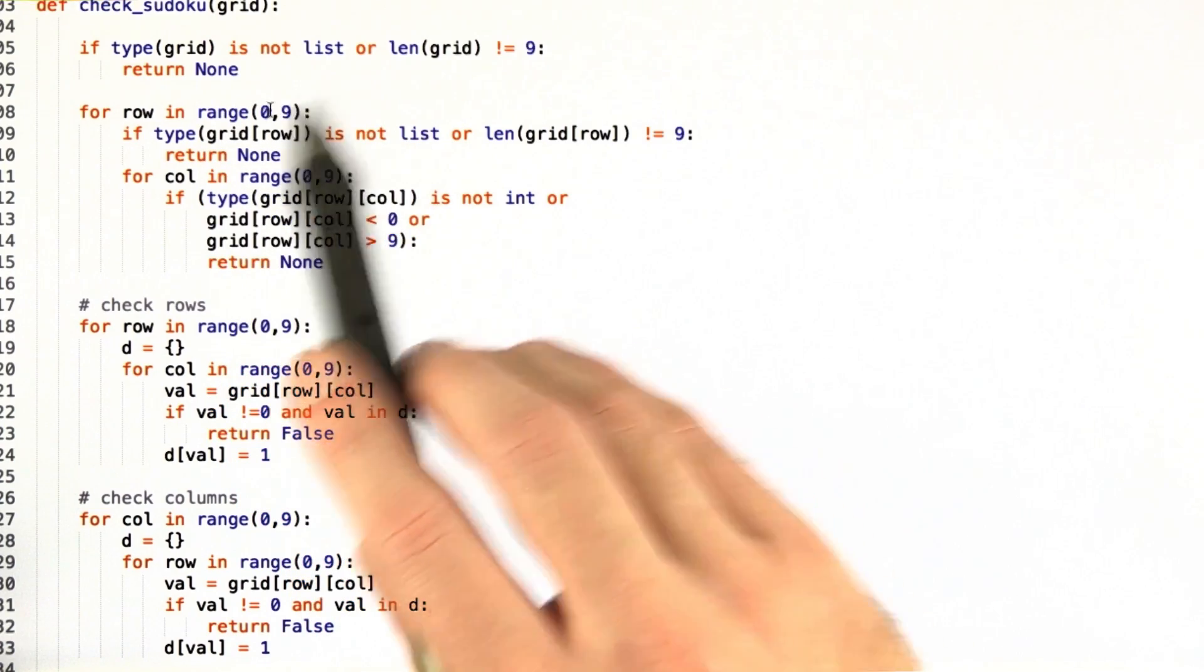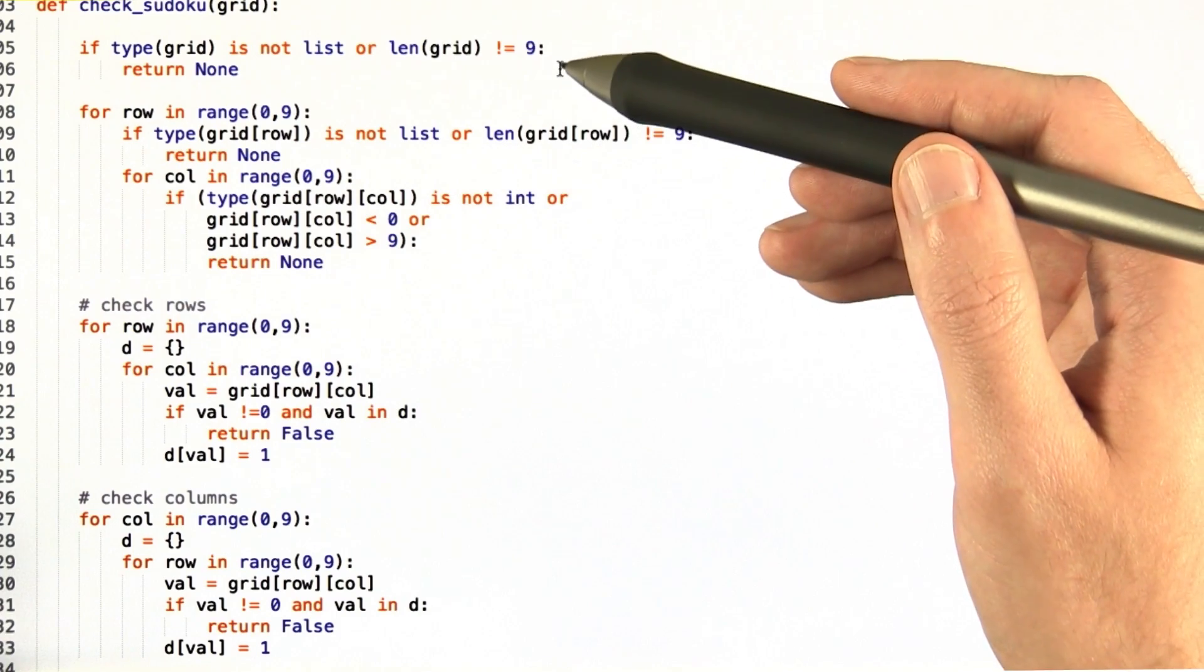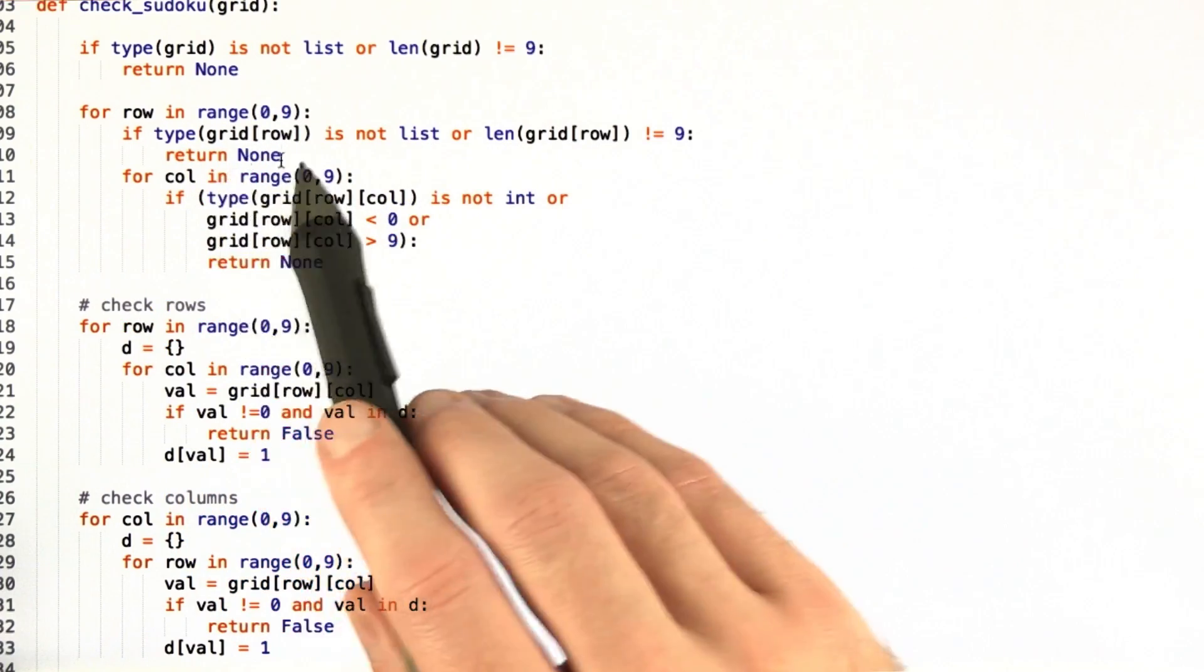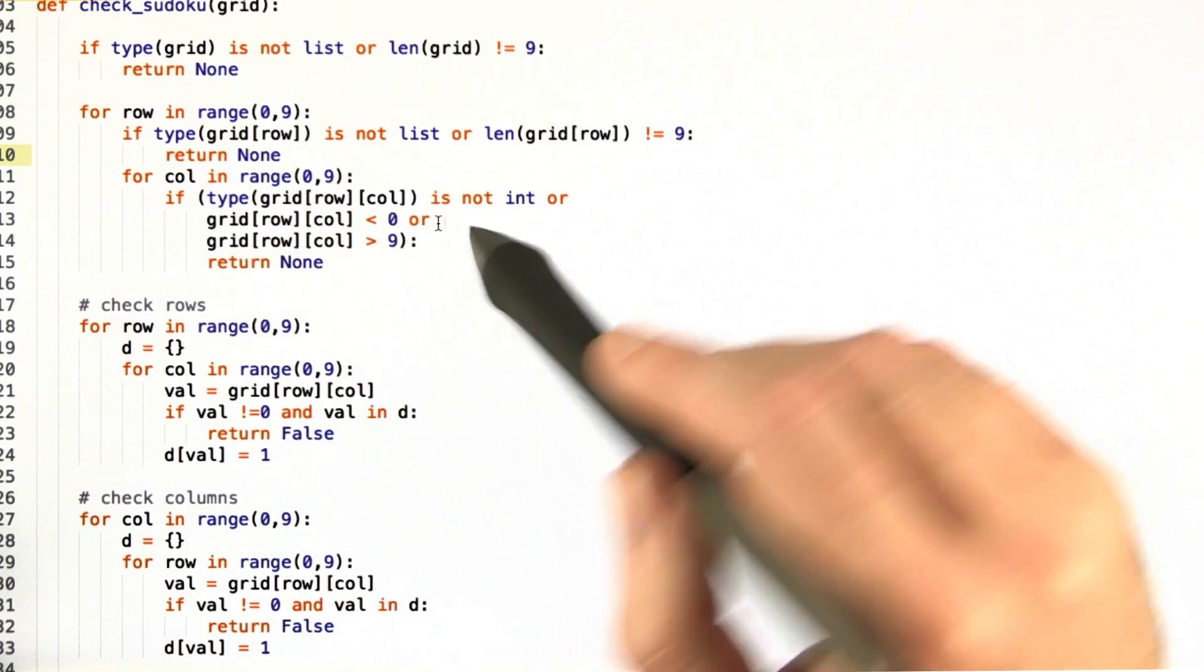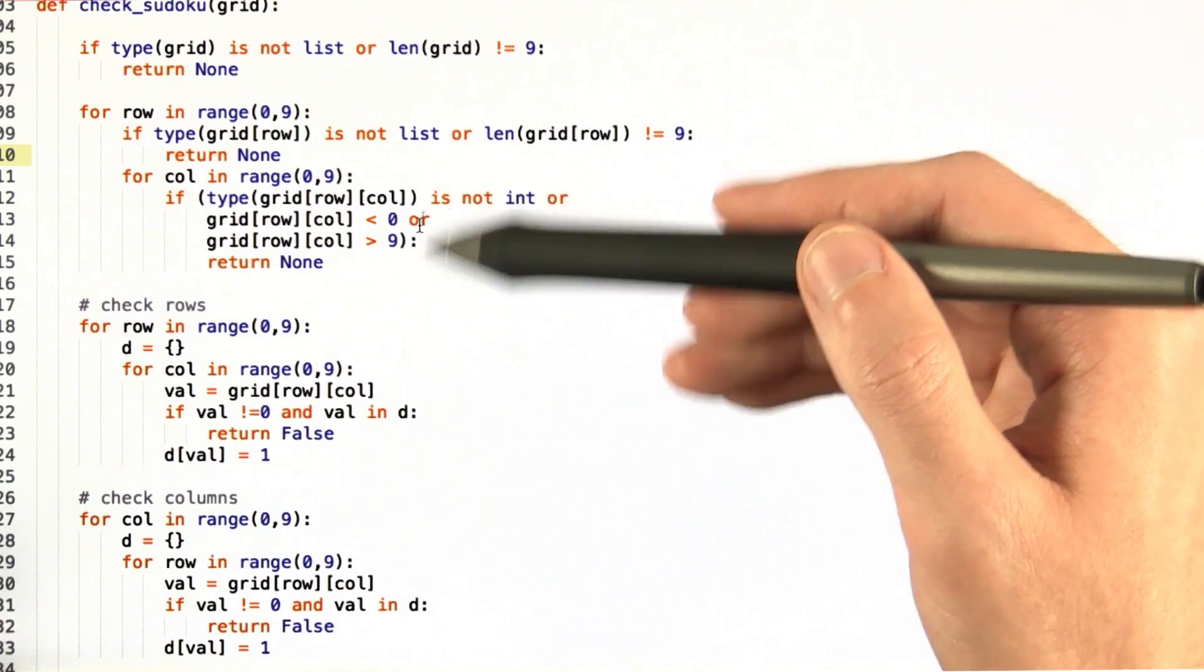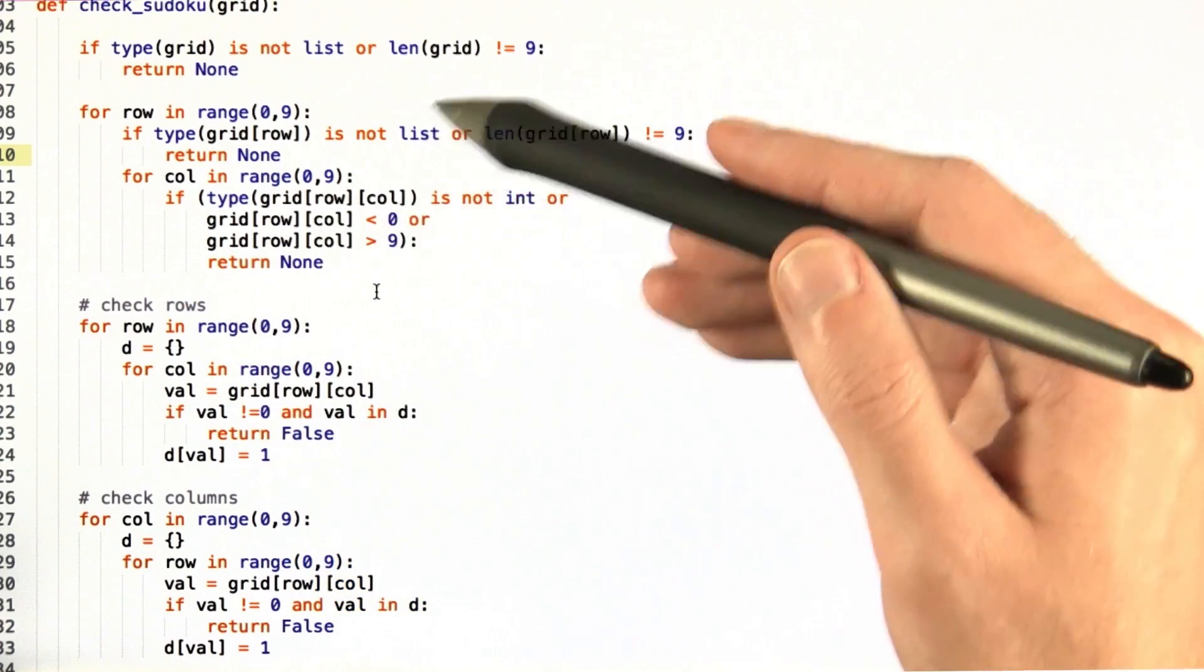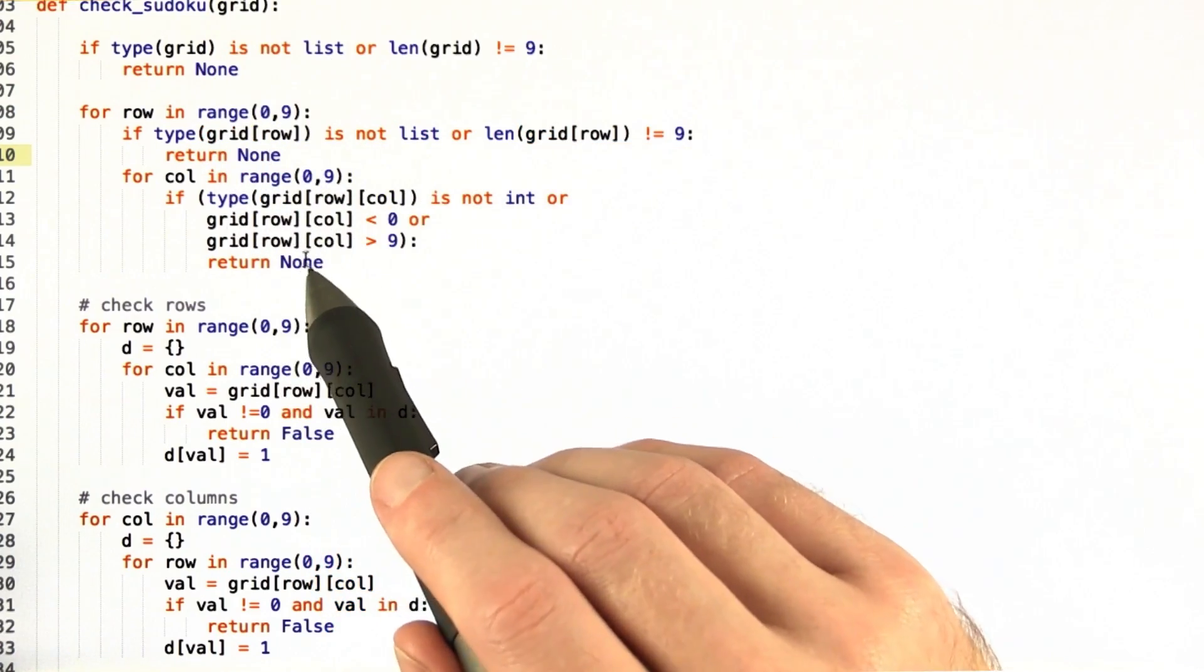First, it checks the type of the grid to make sure that it is a list and that the length of the list of lists is 9. Then for each row, we check the type of that and we check the length for that as well. So this is basically just type checking and length checking over and over again for each different part that we need to make sure about first off.